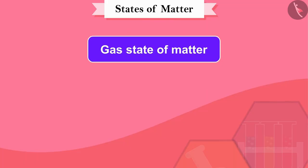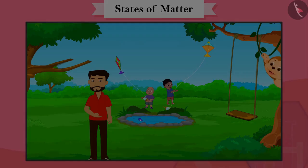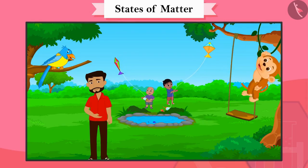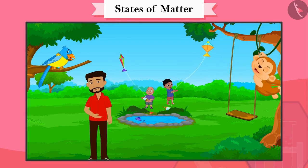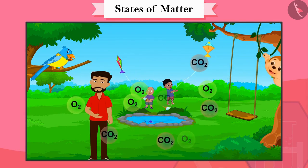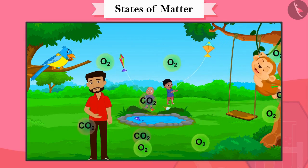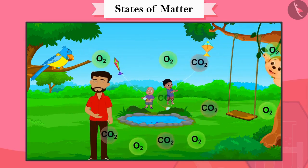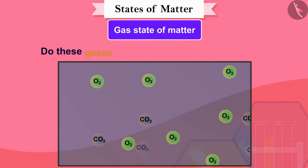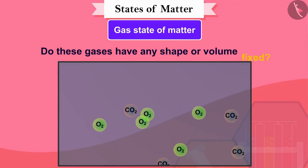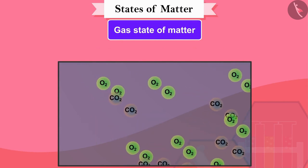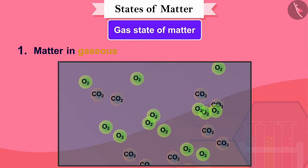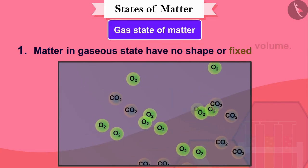Now finally, we will learn about the gaseous state. All living beings breathe for their existence. Gases present in the atmosphere, especially oxygen and carbon dioxide, are essential for animals and plants. Do these gases have any fixed shape or volume? No. Therefore, we can say that matter in gaseous state has no fixed shape or volume.